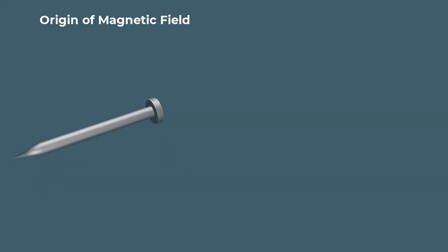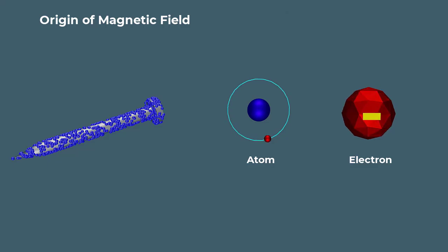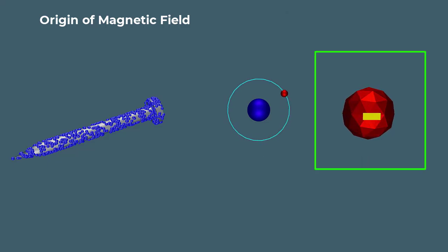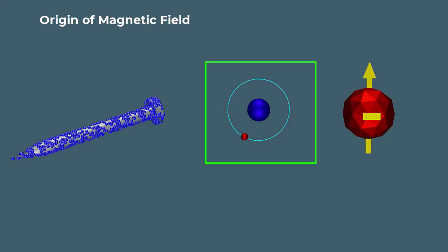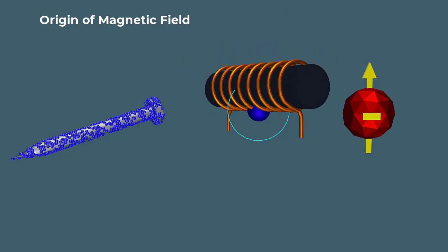Every substance is composed of tiny units called atoms. Each atom has electrons which carry electric charges. These electrons spin about their own axis and revolve around the nucleus of the atom.